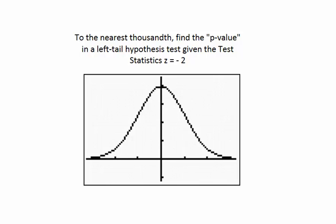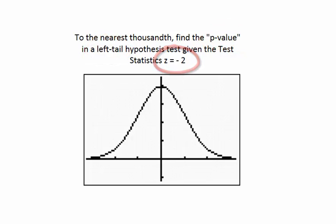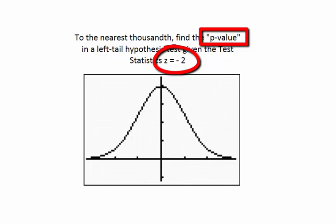In this problem, we're asked to find to the nearest thousandths the p-value in a left-tailed hypothesis test given a test statistic equal to negative 2. Before doing this problem, let's establish the relationship between p-value and the test statistic.